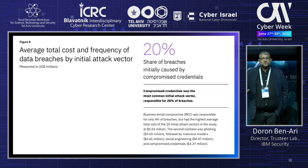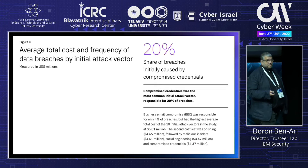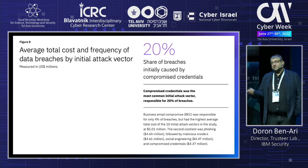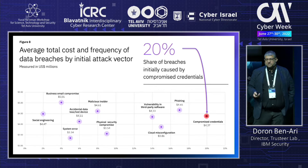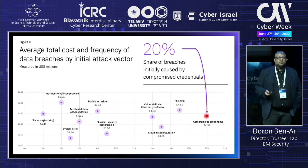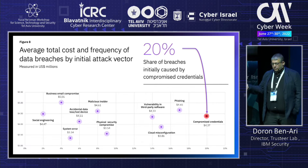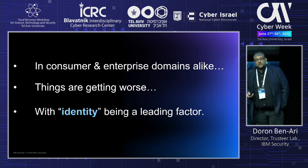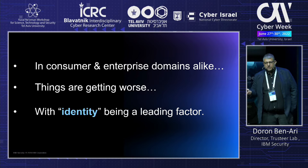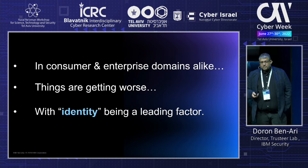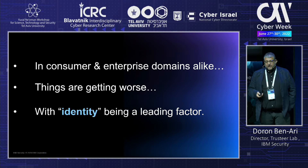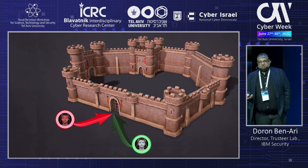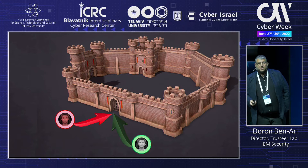The lower chart shows the average total cost of a data breach, which keeps rising over the past five years. Looking at key reasons, the survey indicates that 20% of the problem comes from identity breaches. You might think 20% isn't a lot, but it's actually the biggest single factor, followed by phishing, cloud misconfiguration, vulnerabilities, and so on. Both consumer and enterprise markets are getting worse, and identity is a leading factor.